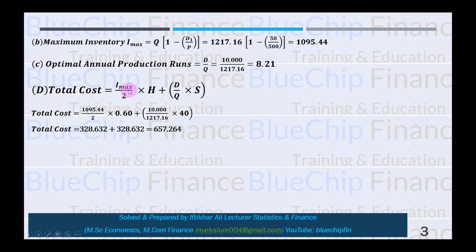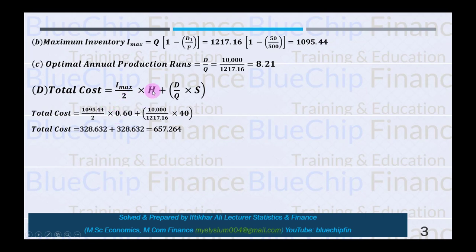The fourth requirement is the total cost, which equals average inventory times holding cost plus setup cost per year. Total cost = (I_max / 2) × H + (D / Q) × S = (1,095.44 / 2) × 0.60 + (10,000 / 1,217.16) × 40 = $657.264.